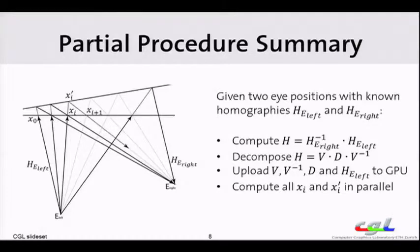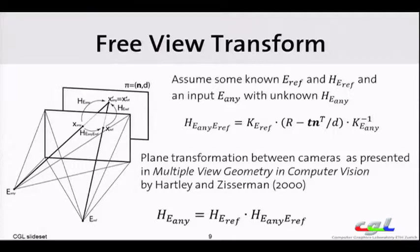So the question is now how can we get H_left and H_right, these two homographies, given two eye positions? For this purpose we use a principle from computer vision which is called the free view transform, which is a transformation between homographies.